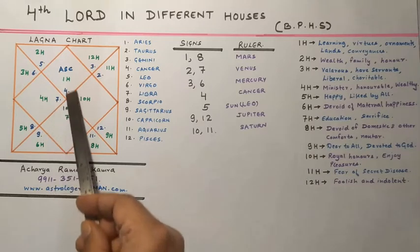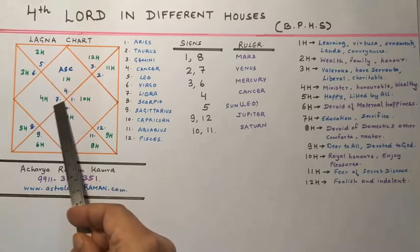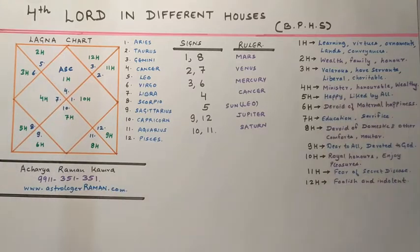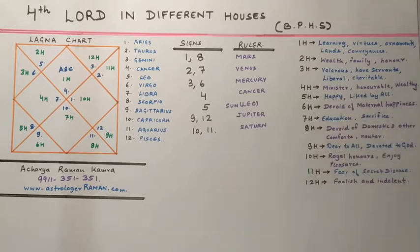If the 4th lord be placed in the 4th house itself, the native will be a minister and will possess all kinds of wealth. He will be skilful, virtuous, honourable, learned, will lead a happy life, and be well disposed to his spouse.